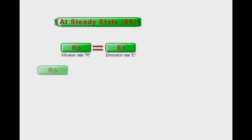To calculate it, the infusion rate is equal to the elimination rate. So infusion rate is equal to the steady state concentration, abbreviated as Css, multiplied by clearance, abbreviated as Cl.